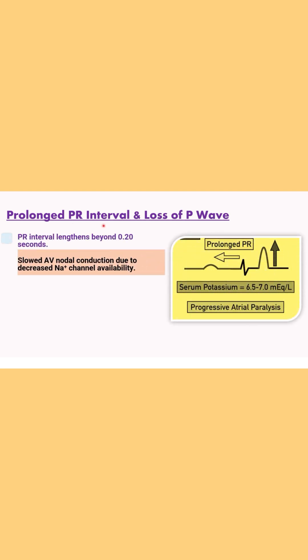The second important ECG changes which appear in hyperkalemia are raised PR interval and loss of P waves. The PR interval is increased due to the slow AV nodal conduction due to decreased sodium channel availability. And also the P wave flattening or loss occurs.